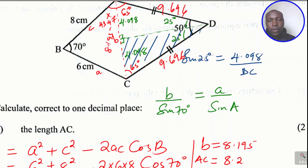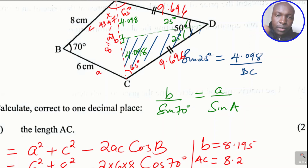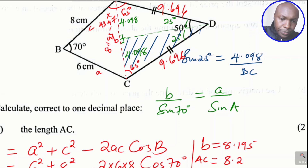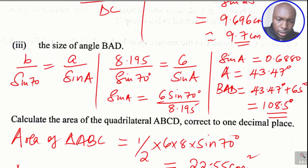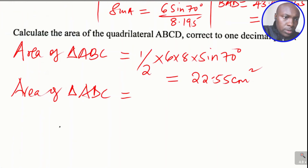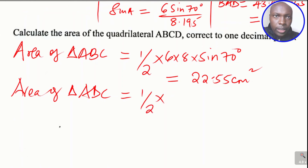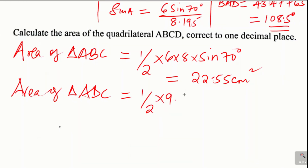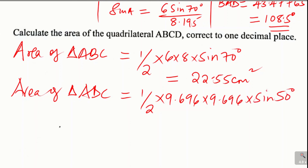For the area of triangle ACD, we use the same formula: one half times DC times DC times sine of the included angle. DC is 9.696, so it is one half times 9.696 times 9.696 times sine of 50 degrees, which gives 36.01 centimeters squared.